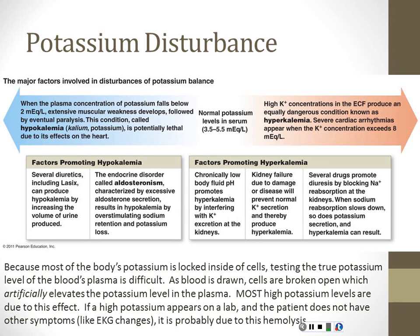What we want to avoid is treating a patient for a false high potassium and driving their level down below normal, creating new problems. Always, when you get an abnormal lab, go look at the patient. If this patient's potassium was really 10, they'd already have cardiac arrhythmias. You can check the EKG monitor and say, 'Well, this can't be right.' Potassium can be kind of a nightmare. Potassium and its fun in the real world.